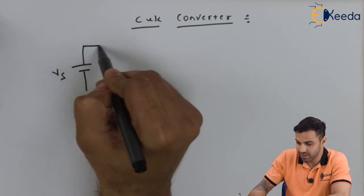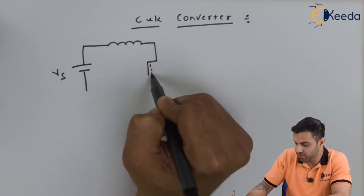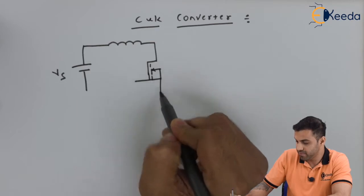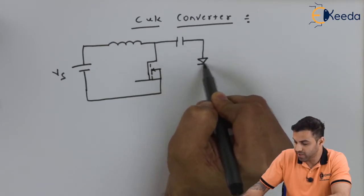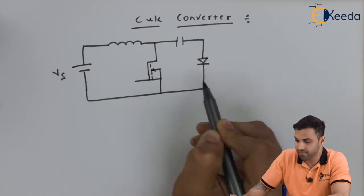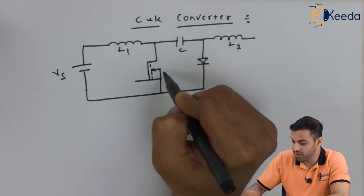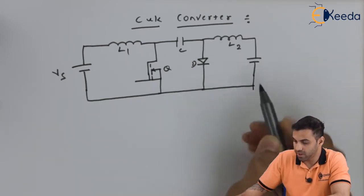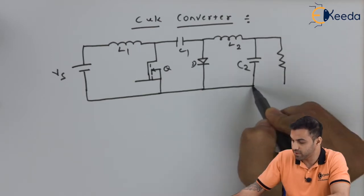Let's see how the circuit diagram of a Cuk converter looks. We have the input voltage, a DC inductor, and an N-type MOSFET with a gate control drive. A capacitor and a diode are connected in the circuit. There is a second inductor — let's label them L1 and L2 — along with capacitor C1, switch Q, diode D, and output capacitance C2.